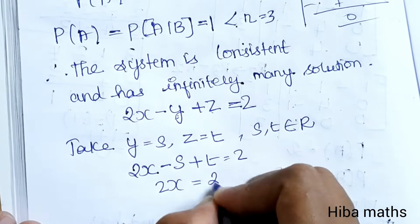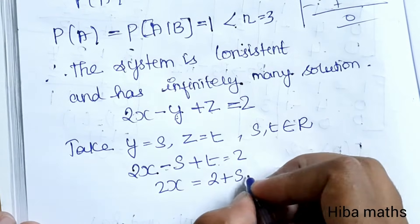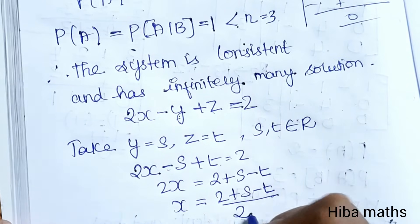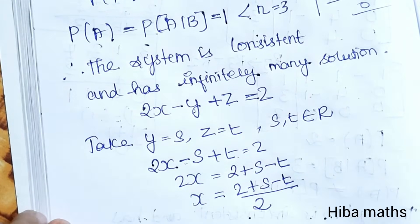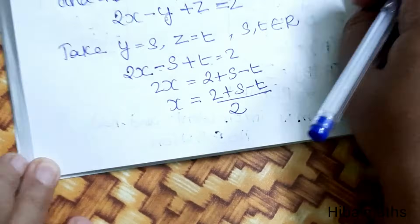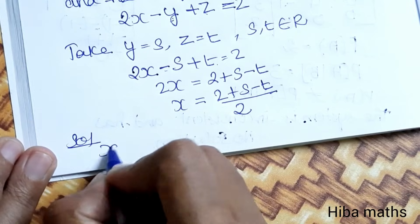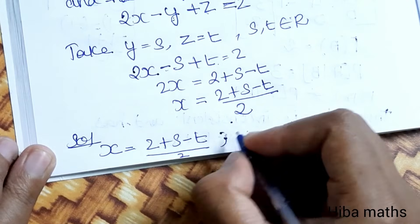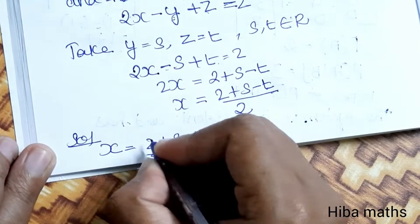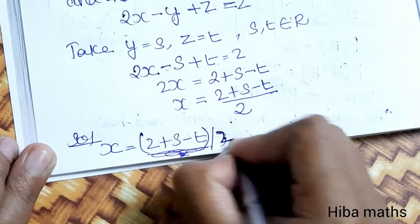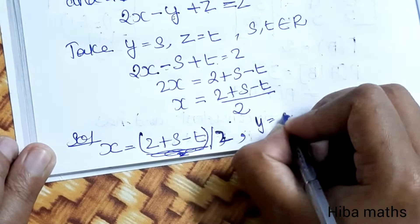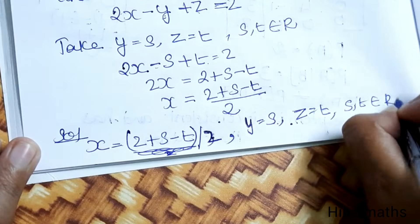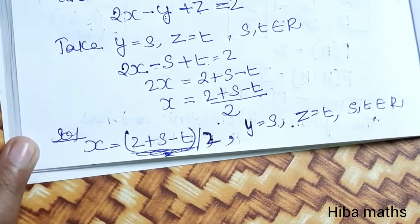Solving for x: 2x equals 2 plus s minus t, so x equals (2 plus s minus t) divided by 2. Therefore the solution set is: x equals (2 plus s minus t)/2, y equals s, z equals t, where s, t belong to R. Thank you so much for watching.